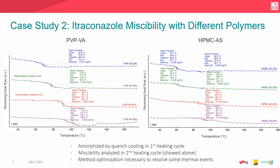In case study two, we analyzed the miscibility of itraconazole, which is a very poorly soluble API and a commonly used model compound in amorphous solid dispersion research. We examined the miscibility of itraconazole with two different polymers — PVPVA and HPMCAS — which are also two widely used polymers in the production of amorphous solid dispersions.